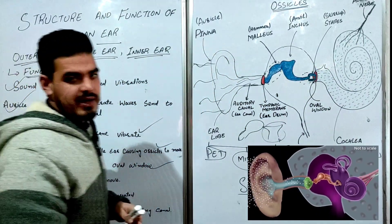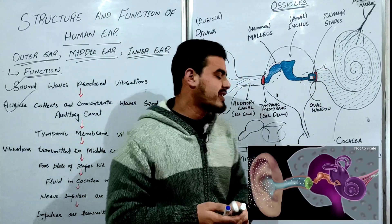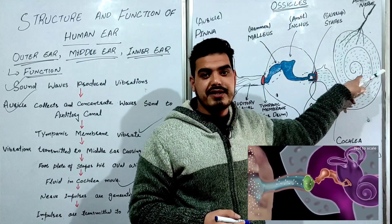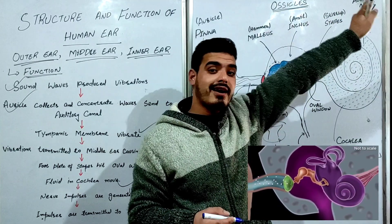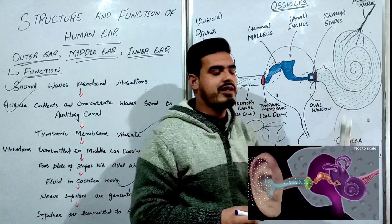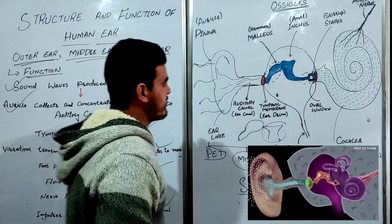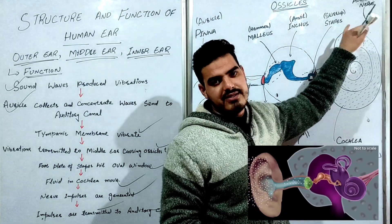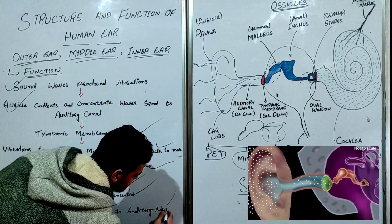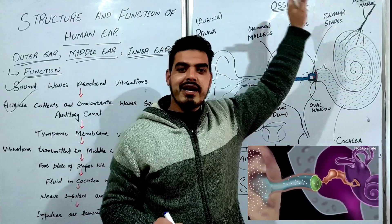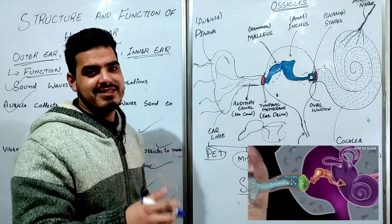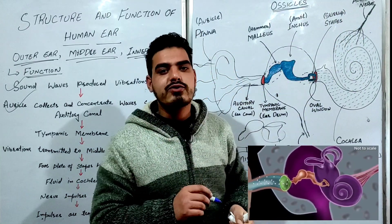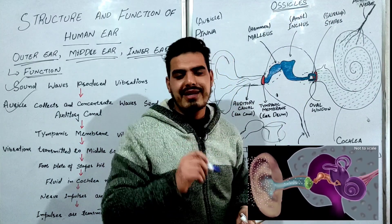After the oval window is struck, the fluid in the cochlea moves. This movement of fluid generates nerve impulses in the auditory nerve, which transmit the impulses to the brain. The auditory (sensory) nerve carries these electrical impulses to the brain, and that is where sound is actually perceived and sensed.